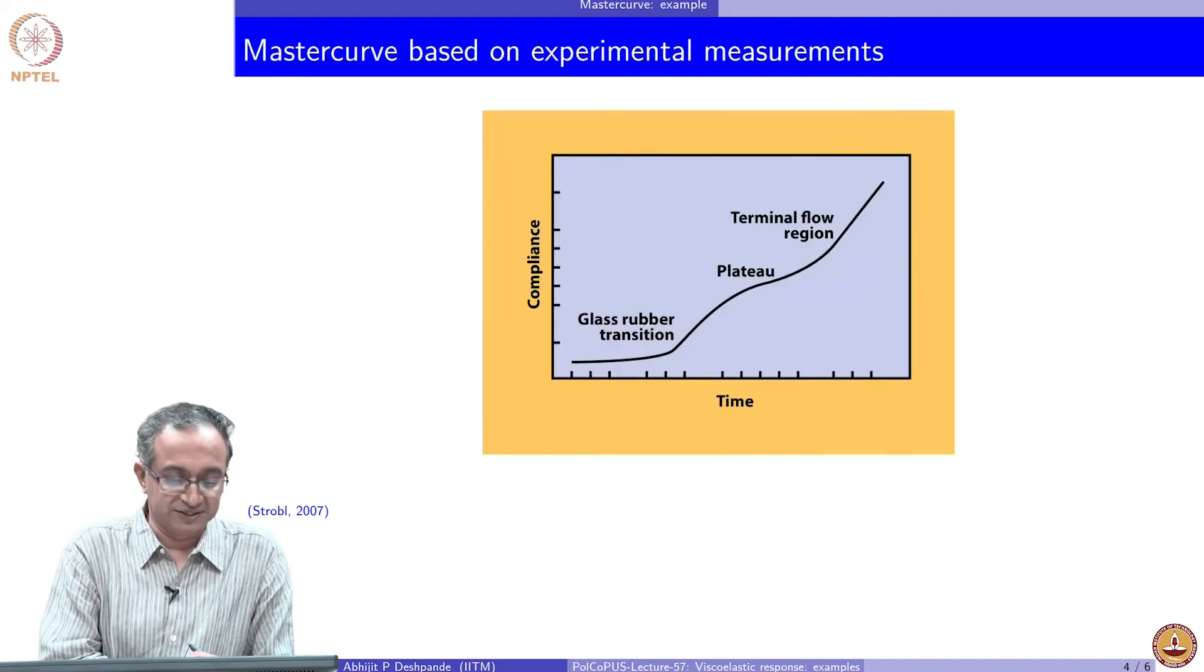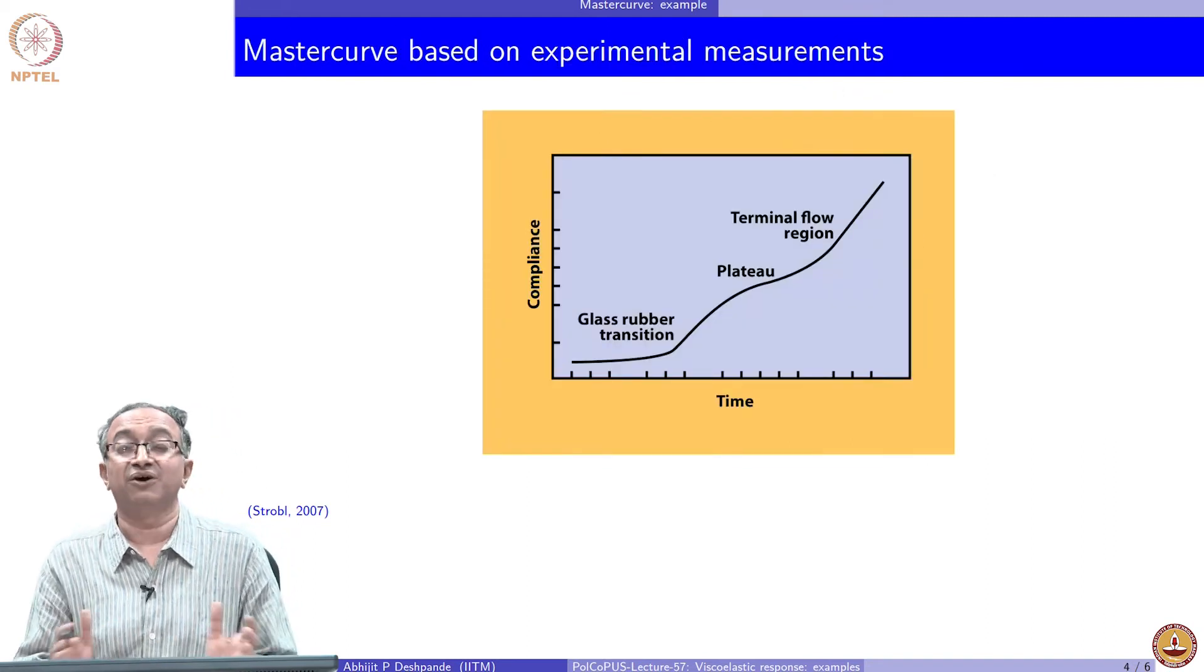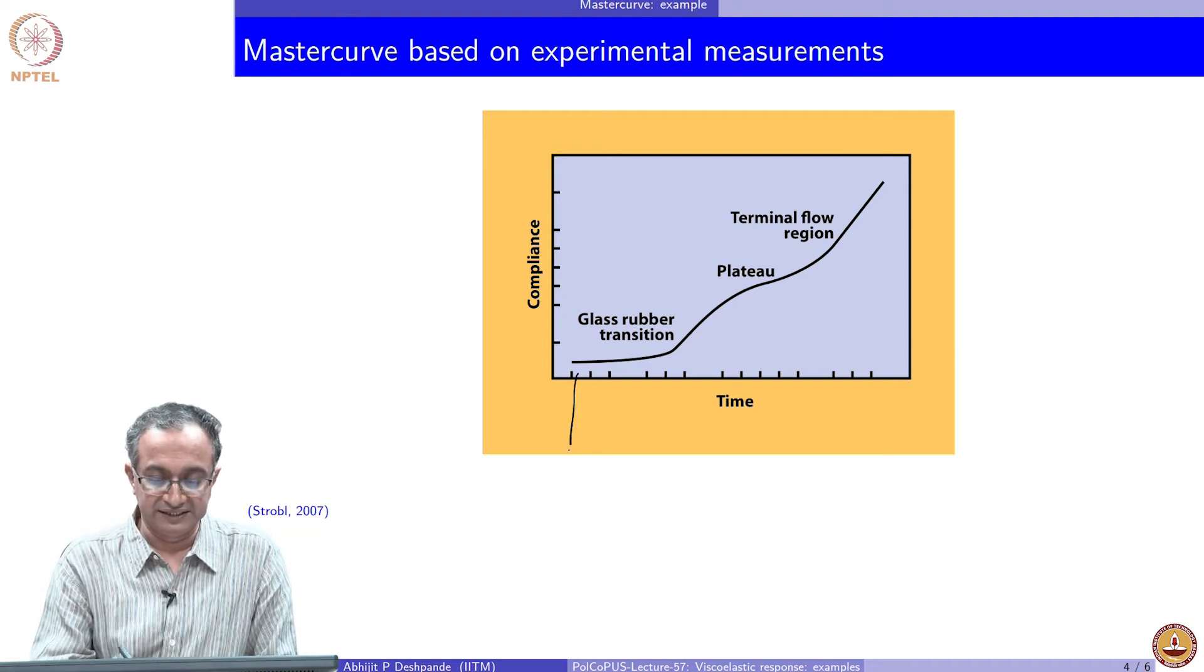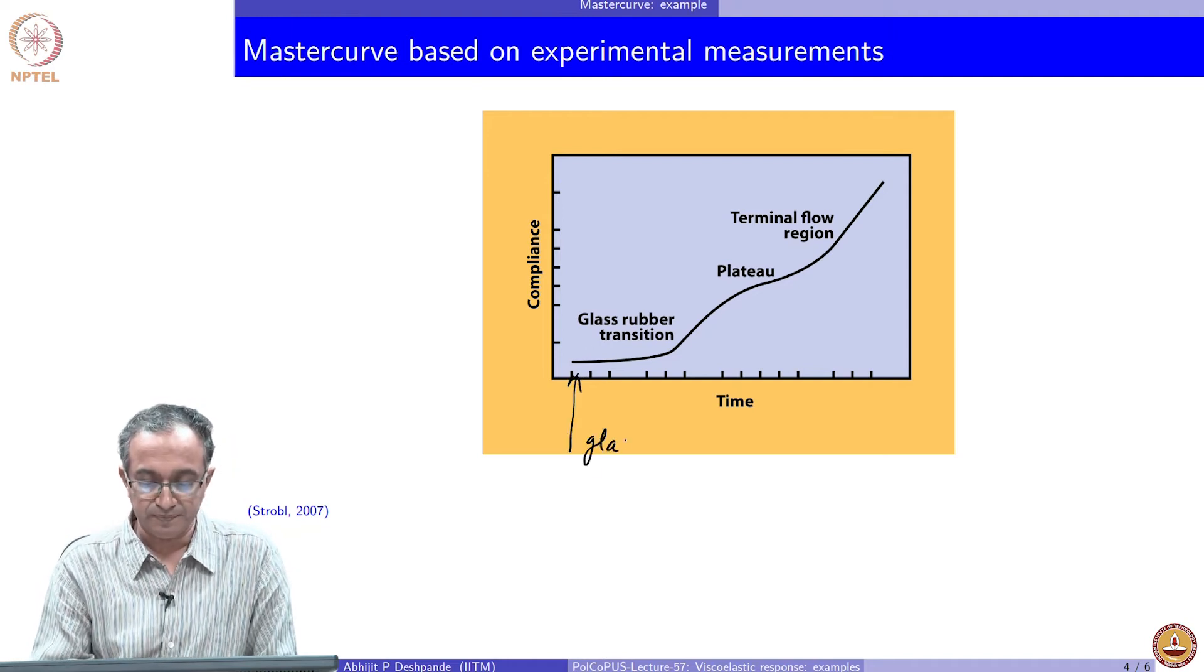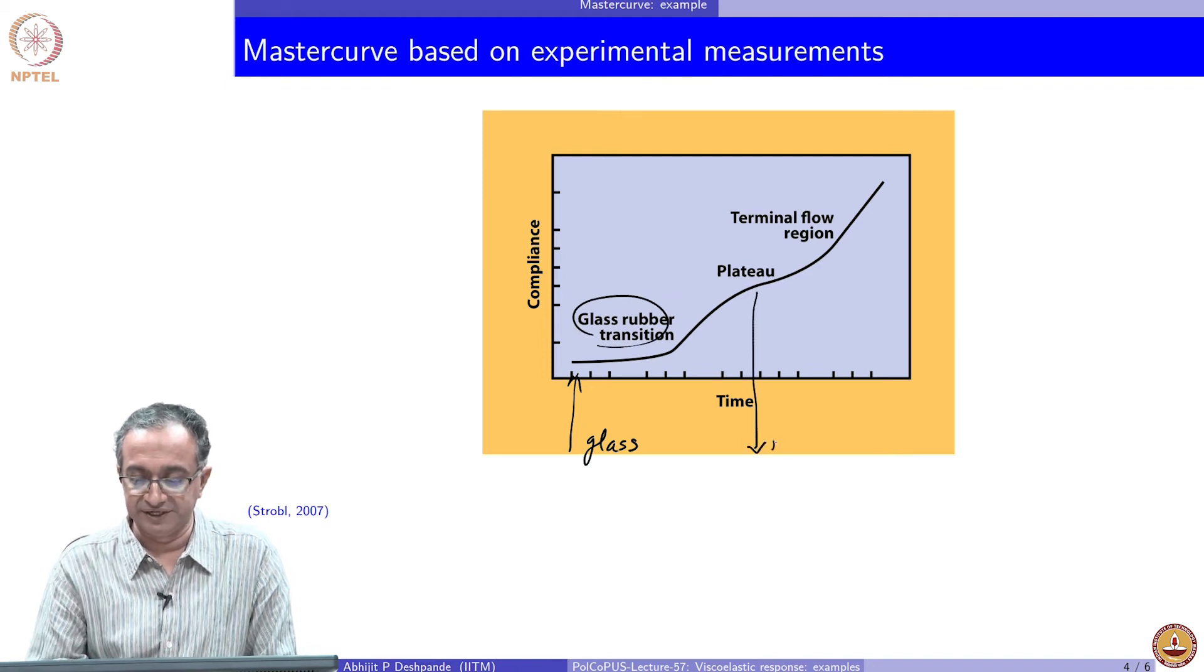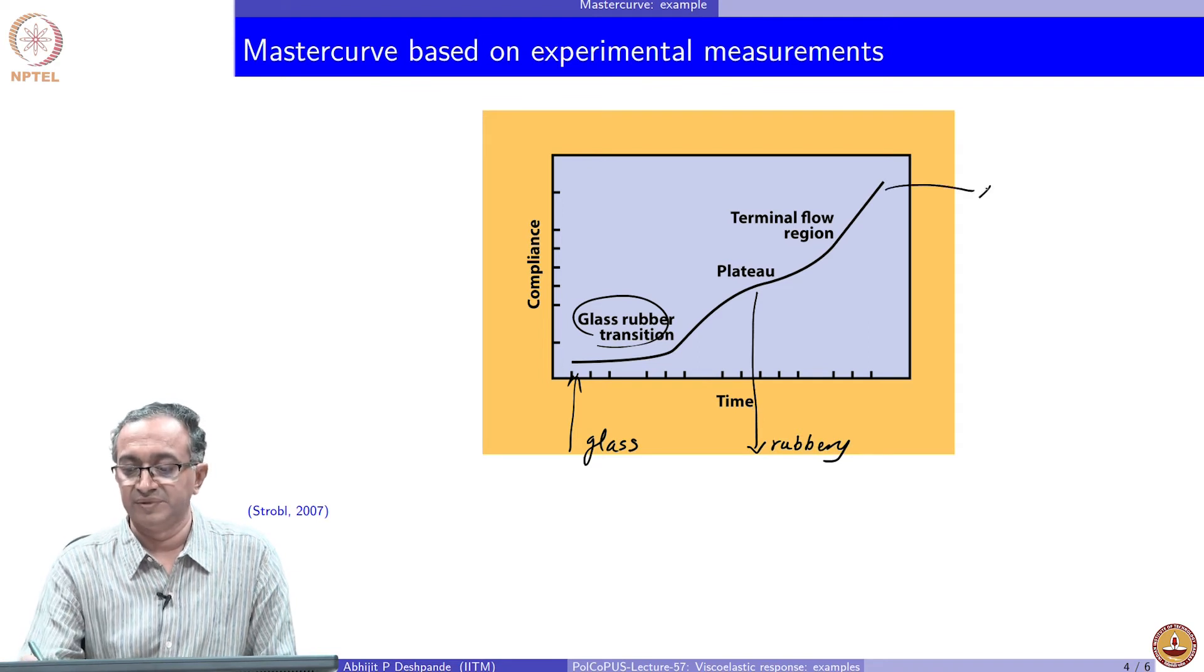So if you construct a master curve based on this, this is how the response will be. So what we have is basically the glassy region, then we have the transition and then we have the rubbery region and then we get the melt region.